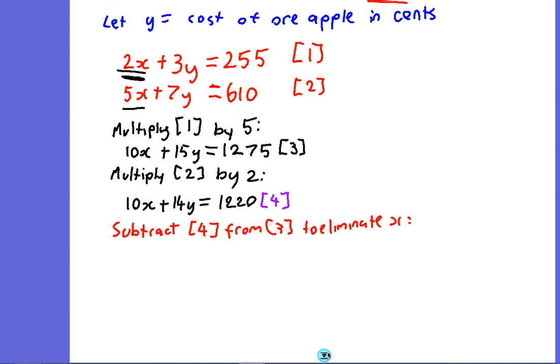And that is going to give us the x's cancel out. We get 15y minus 14y, so that nicely comes out as just y. And you may be able to spot that we've got 1275 minus 1220, and we're left with 55. And that's why I chose to subtract 4 from 3 rather than the other way around—because that way, apart from going down the hill, which is nice, I got a positive number on the right-hand side.